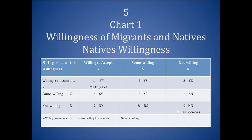Since Punjabis wanted to settle there, they brought their families. Some of them got married in Thailand, whereas others went back to India to get married. In the beginning, all of them settled in one area called Faurat, also known as Mini India.